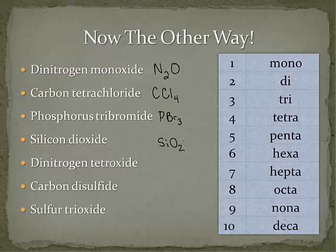The next one has a prefix — it's dinitrogen, just like the first example. So we write nitrogen with di meaning two, giving two nitrogens. Tetroxide comes from tetra and oxygen, so we have four oxygens: N₂O₄. Carbon disulfide: we have one carbon, sulfide comes from sulfur, and di means two sulfur atoms: CS₂. Finally, sulfur trioxide means one sulfur and three oxygens: SO₃.